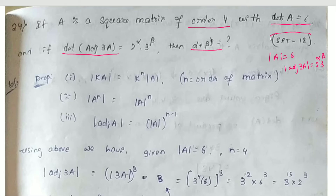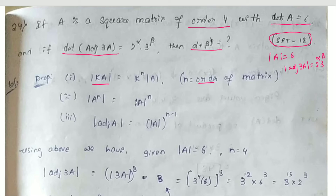This is a 2018 paper question. I will use three properties. The first property is: determinant of k times A equals k to the power n into determinant of A. The second property is: determinant of A to the power n equals determinant of A, whole to the power n.